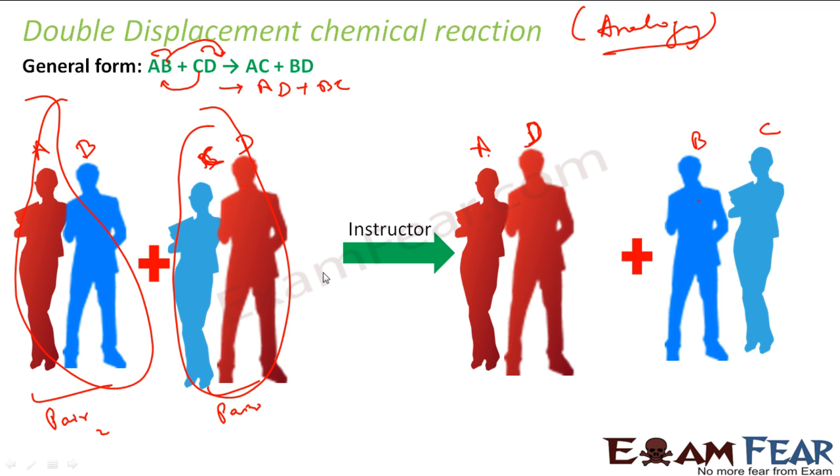It swapped the condition called instructor. This is something that happens in real life. So we form a pair and then our dance teacher says, no, this pair does not look good. Let us swap. And we swap our partners. So that is one example of a double displacement chemical reaction where both are swapped, not only one.